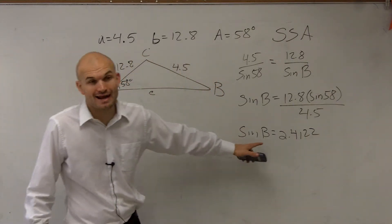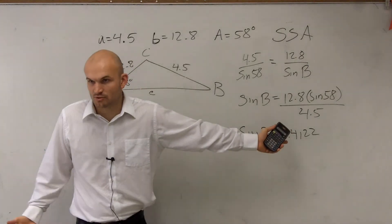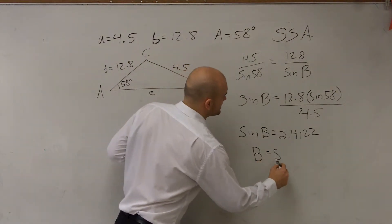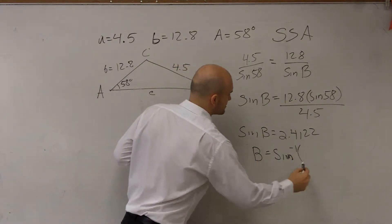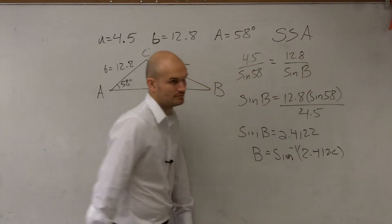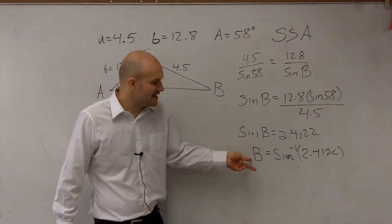So now to find actually our angle, remember it says the sine of your angle is equal to this decimal, which represents a ratio. So therefore to find B, I need to say sine inverse of 2.4122. Why do you inverse it? Because we need to find the angle, right? We need to find what B is.